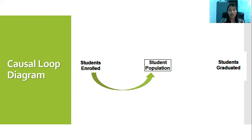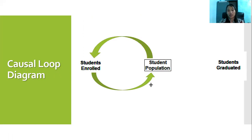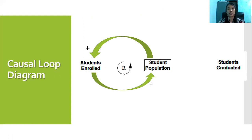Student enrollment leads to a positive causal link to student population. Then, if there are more students today, more of them will enroll in the future. Since they both go in the same direction and both are positive, it is a reinforcing loop, represented by the symbol R.